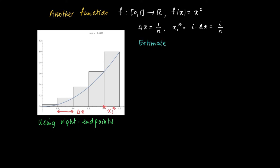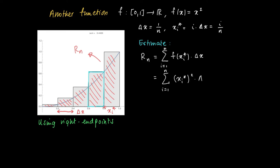So as an estimate for the surface area that we try to define, we just add up all the surface area that we indicate here in red. This is no more than the sum from i equals 1 to n of (x_i star) squared, because here we have the quadratic function times delta x.